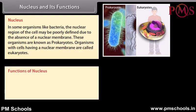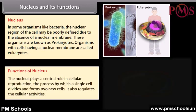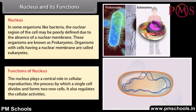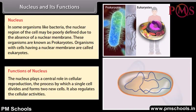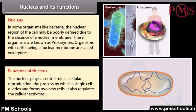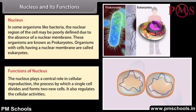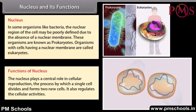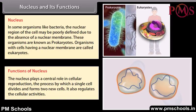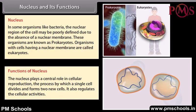The nucleus plays a central role in cellular reproduction — the process by which a single cell divides and forms two new cells. It also regulates cellular activities.